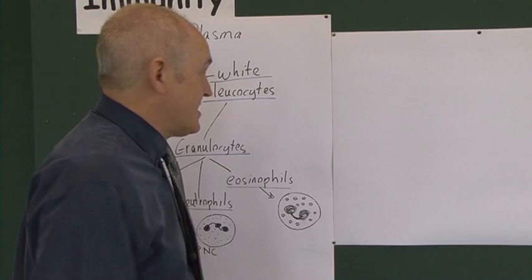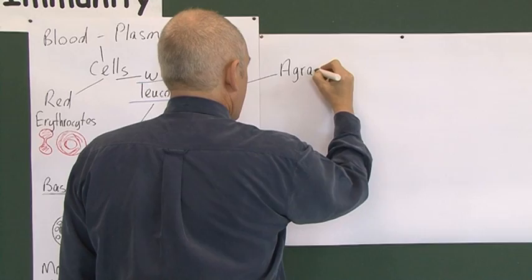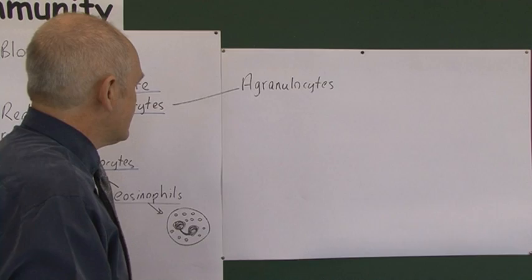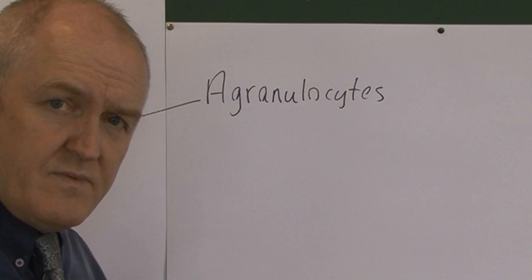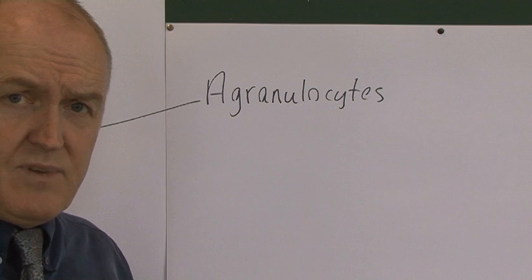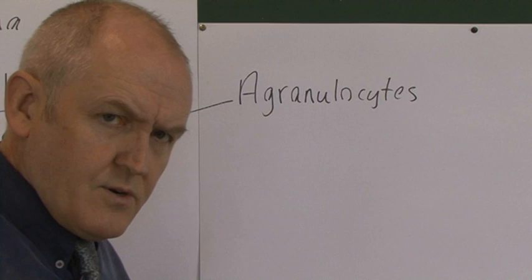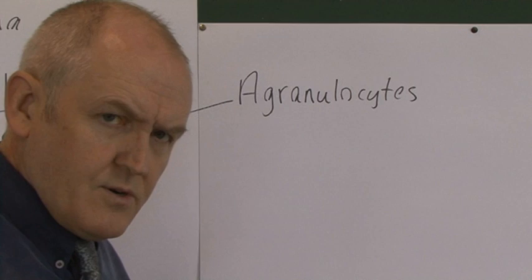The next classification of cells is the agranulocytes. These are cells which don't have apparent granules in their cytoplasm under light microscopy. In fact, some of them do, but this is how they were first described — people said they had no granules in their cytoplasm. With more advanced techniques, we can actually see some granules.